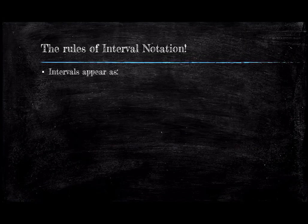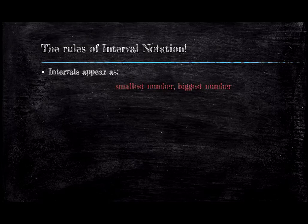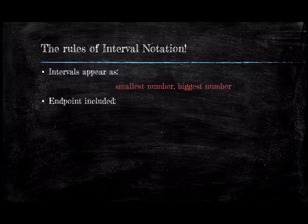Let's start with interval notation. First, we will cover the basic rules. Intervals will appear as smallest number, comma, biggest number. To indicate whether these endpoint numbers are included, we encase it with a square bracket. If the numbers are excluded, they are encased by parentheses.